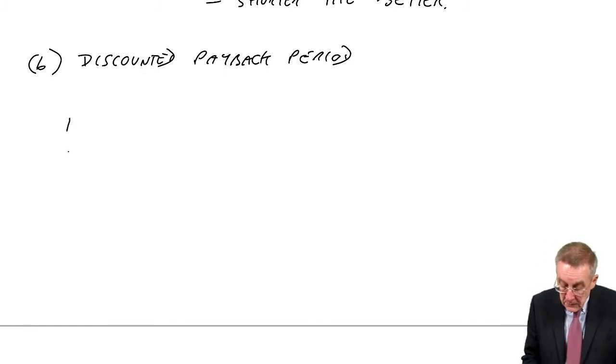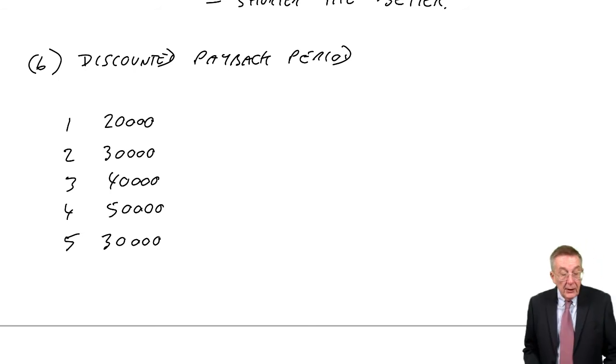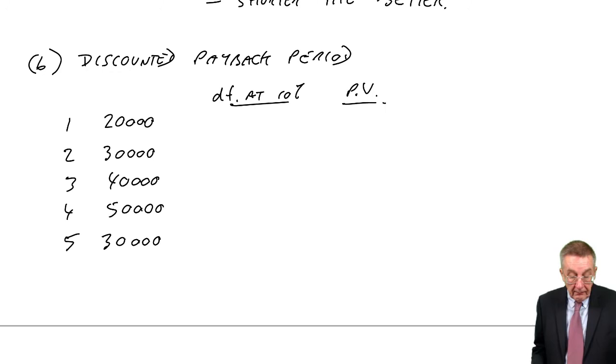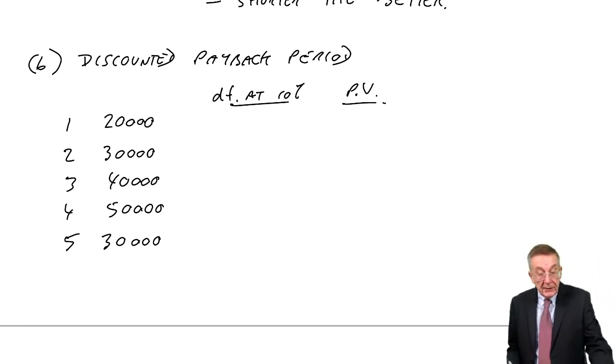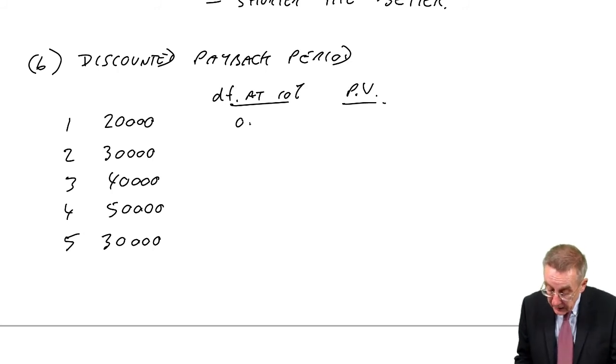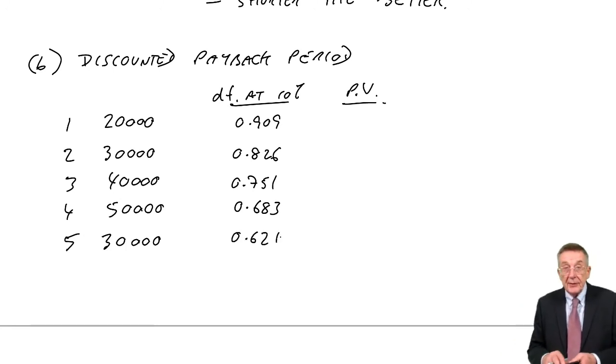Let's discount them. The flows are 20,000 in the first year, 30 in the second, 40 in the third, 50 in the fourth, and 30 in the fifth. The cost of capital is 10%. So multiply by the discount factors at 10% to get the present values. From the present value tables, the discount factors for one year, 0.909, for two years, 0.826, 0.751, 0.683, 0.621. Straight discounting, I think we've done enough of that by now.